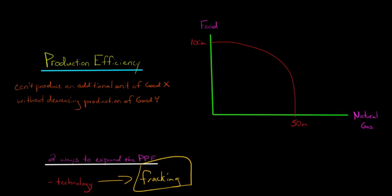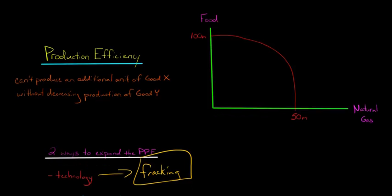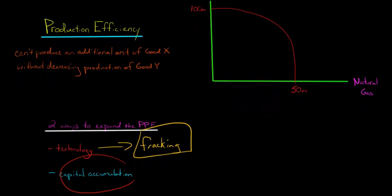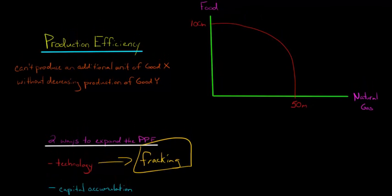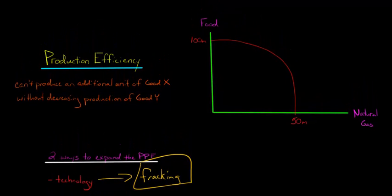Now, another thing that we could do is we could have a situation where there's capital accumulation. So if we accumulate capital, then we can have where we're going to be able to shift this PPF outward. And what does it mean by saying capital accumulation? Well, we're basically trading off current consumption for investment. So let's say, instead of food, let's say that this is bread.